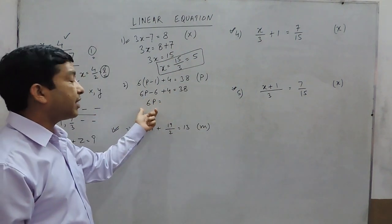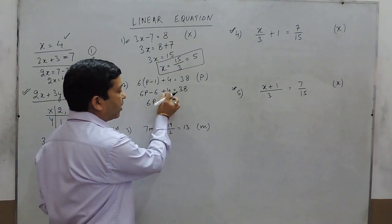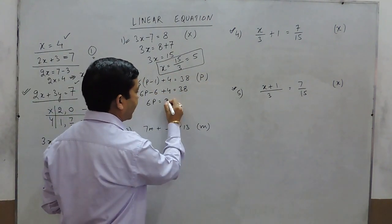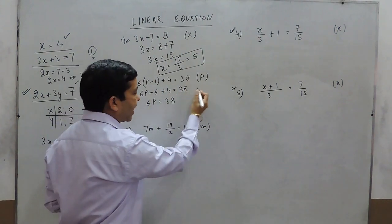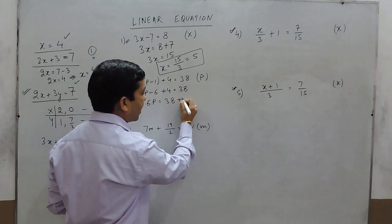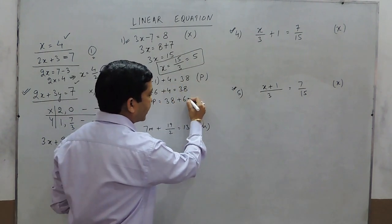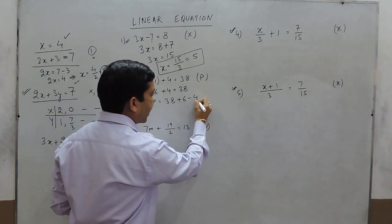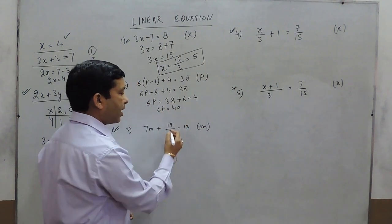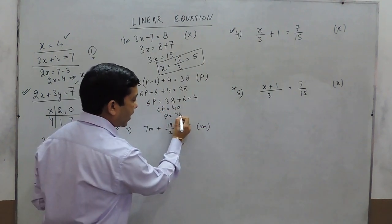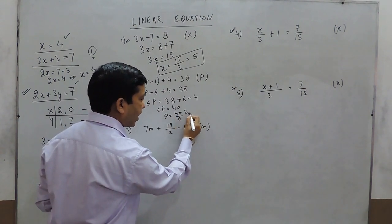Now p is the only variable, so we keep 6p on the left hand side and take all constants to the right hand side. It becomes 38, and this minus 6 moving to the right becomes plus 6, and plus 4 moving to the right becomes minus 4. So 6p equals 40.